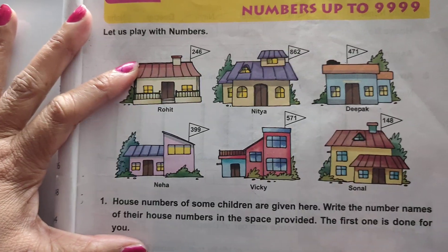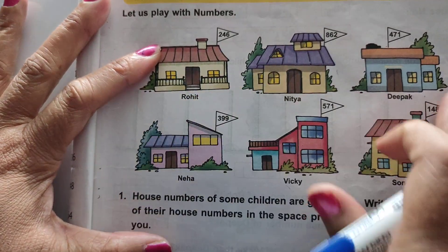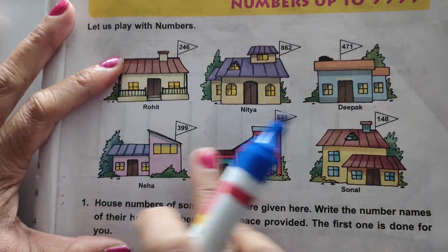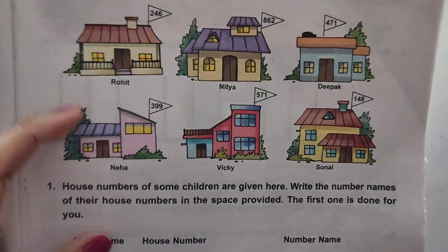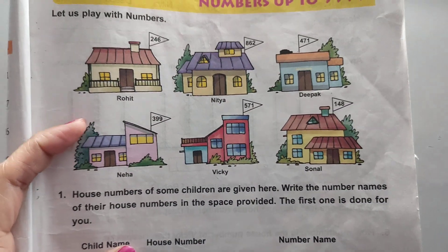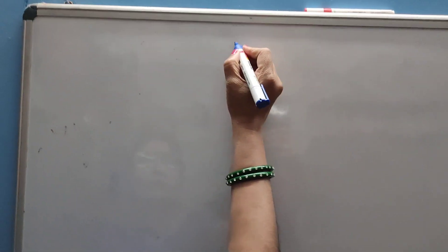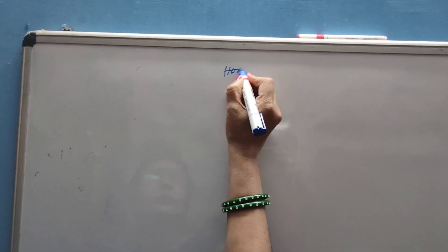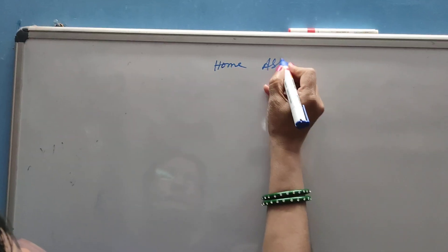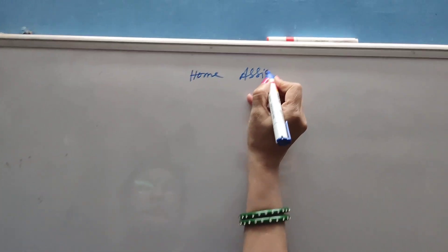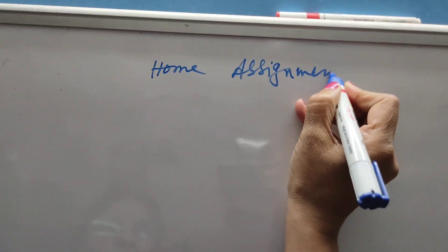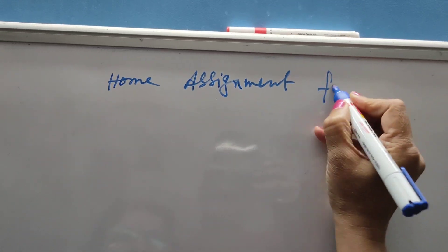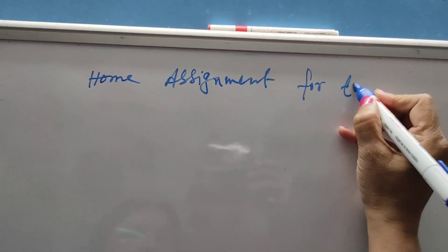Now you have to arrange these house numbers in ascending and descending form. Now, home assignment for tomorrow.